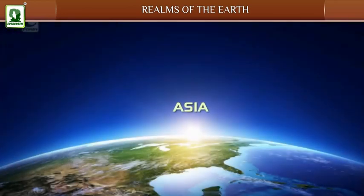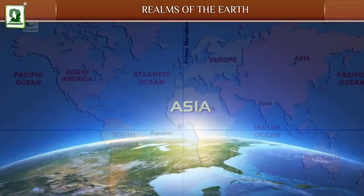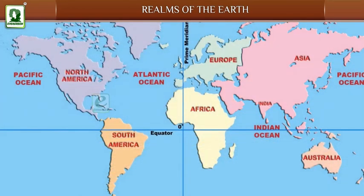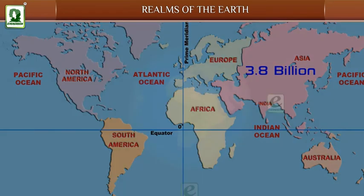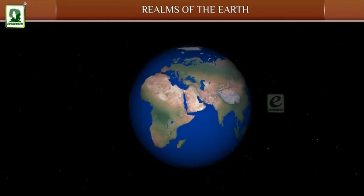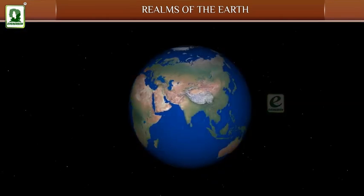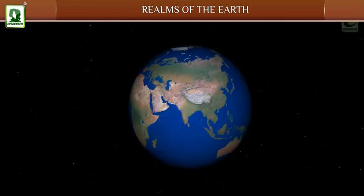Asia: Asia is the largest and the most populated continent, with a population of over 3.8 billion people. It covers about one third of the total land area of the earth.